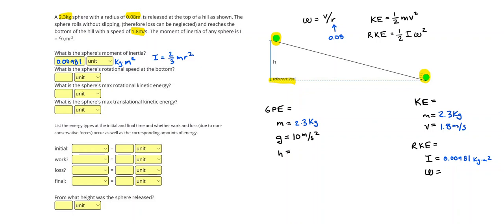Alright, so then it says, what is the sphere's rotational speed at the bottom? So this is our equation for rotational or angular speed, where we're just going to take that regular speed and divide it by the radius. So that velocity was 1.8. I'm dividing by 0.08. And I get 22.5. And since it's angular speed, it's not going to be meters per second. It's going to be radians per second.